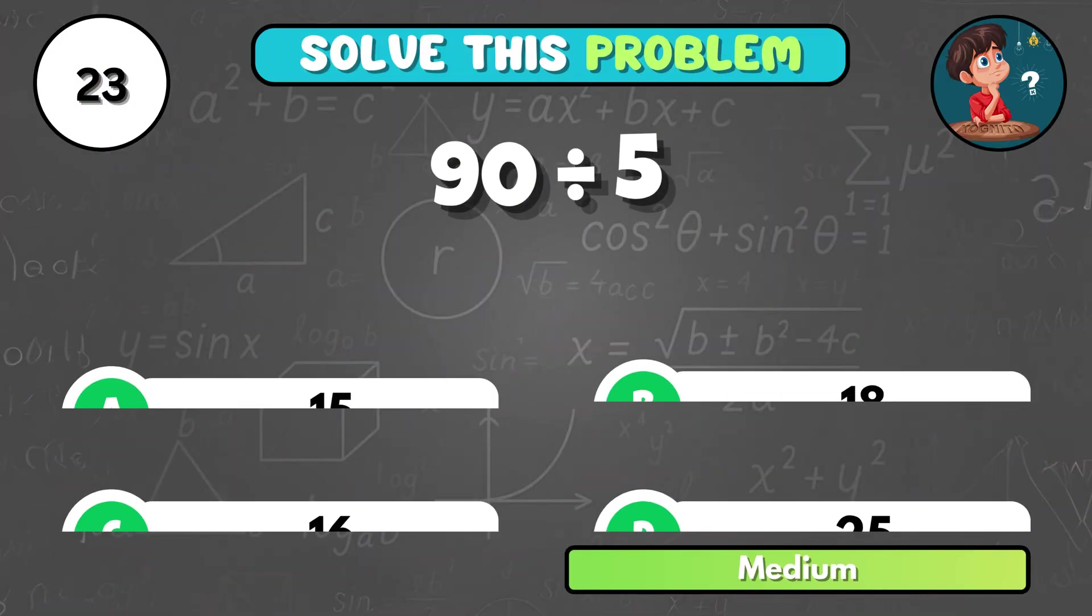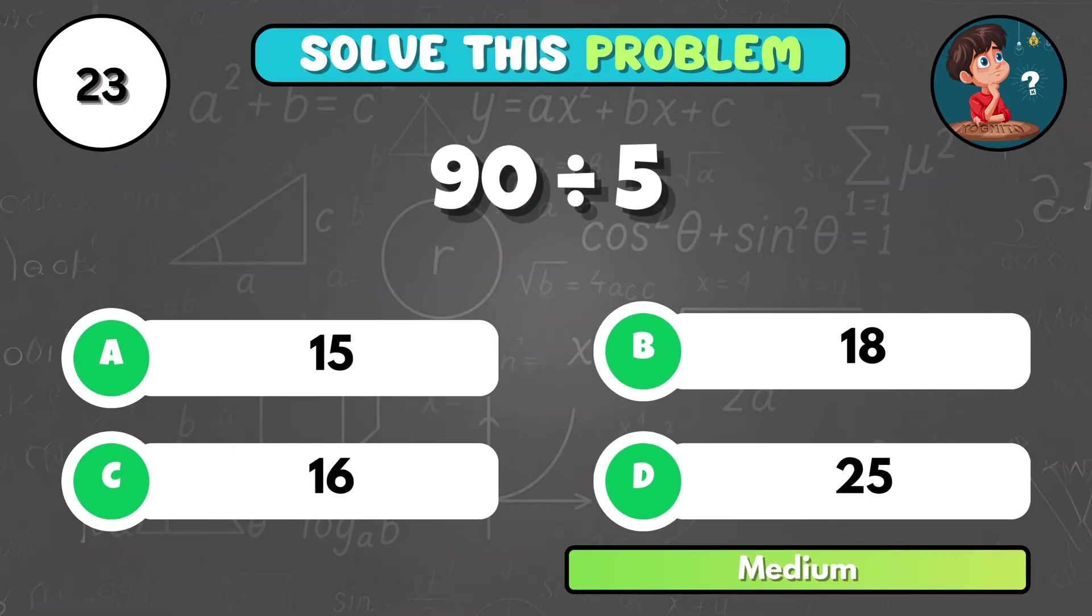How many groups of 5 are there in 90? That's B, 18.